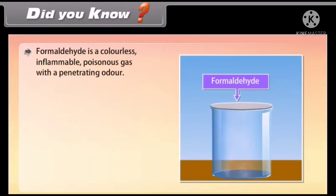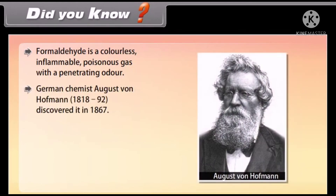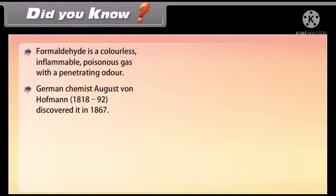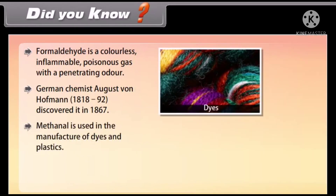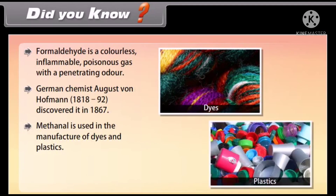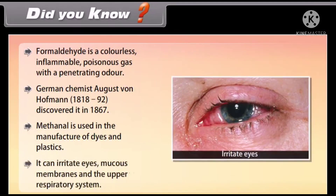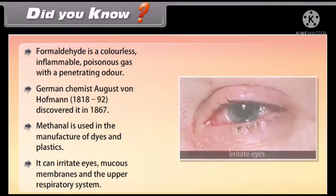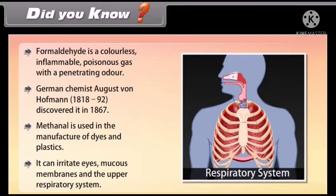Did you know? Formaldehyde is a colorless, inflammable, poisonous gas with a penetrating odor. German chemist August von Hofmann (1818–1892) discovered it in 1867. Methanal is used in the manufacture of dyes and plastics. It can irritate eyes, mucous membranes, and the upper respiratory system.